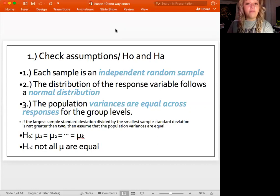And then also the population variances have to be equal across the responses to use an ANOVA test. For number three, in order to check that, a lot of people ask, well, how would I know that? So if the largest sample standard deviation divided by the smallest sample standard deviation, so you need both of them, isn't greater than two, so that's basically saying that your numerator is not twice the amount, then assume that the population variances are equal and that third assumption will be met.